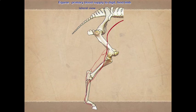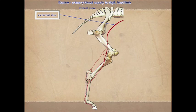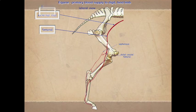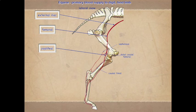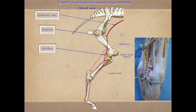Starting with the primary blood supply to the digit of the hind limb in the horse, we have the external iliac which gives rise to the femoral artery. Off the femoral we find the saphenous artery. The distal caudal femoral is where the femoral artery becomes the popliteal artery. The popliteal artery gives off both a cranial and a caudal tibial artery. The caudal tibial will join the saphenous, doing a neat little loop, and then continue as the saphenous.